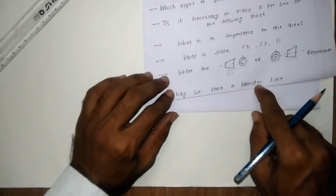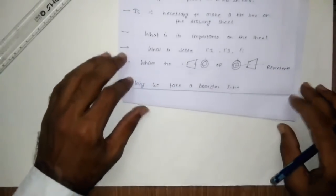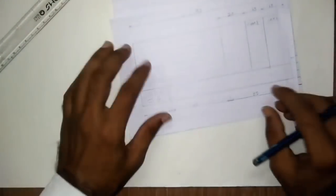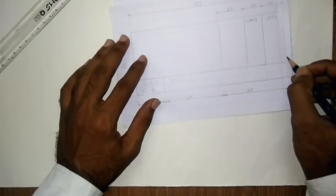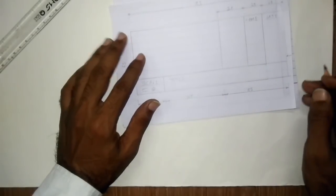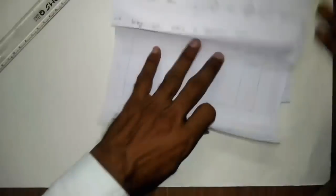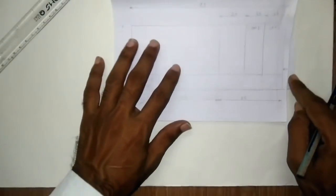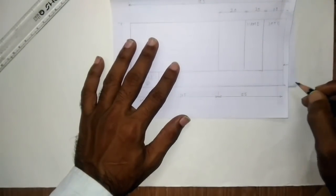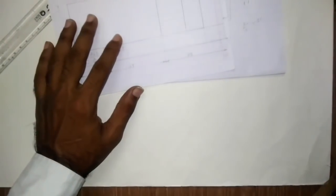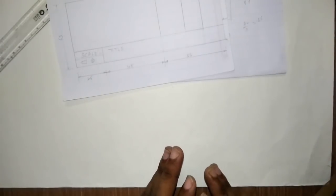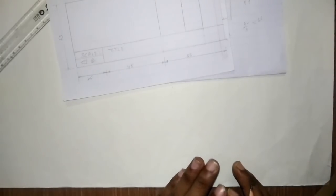Why do we take a borderline? It is necessary because when you use the sheet, it may fold up from the sides or corners. When we file the sheet here, it will be folded up, and the title box may be damaged or disturbed. So we take a borderline so that our title box remains fresh and clear.